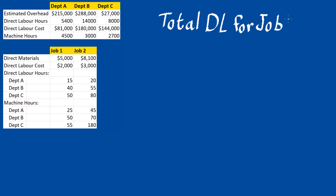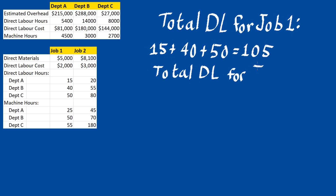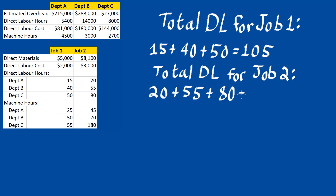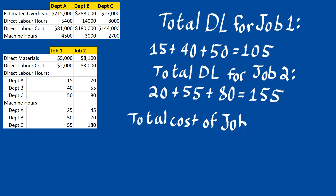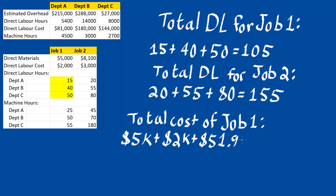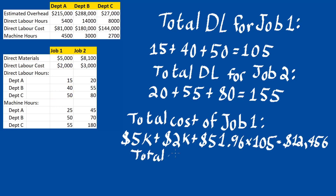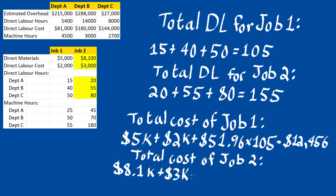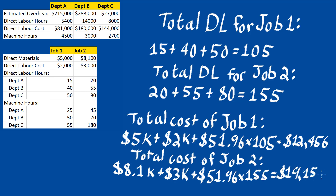Total direct labor hours for job 1 is 105, and the total direct labor hours for job 2 is 155. We now have all the information we need to determine the total cost for job 1, which is the direct materials plus direct labor plus variable overhead, giving us $12,456. You can repeat this same process using the inputs for job 2 to determine that the total cost for job 2 is $19,154.